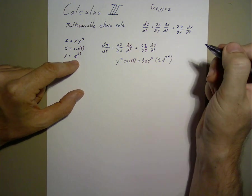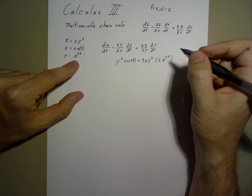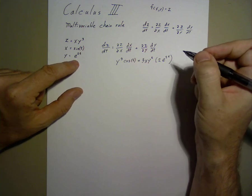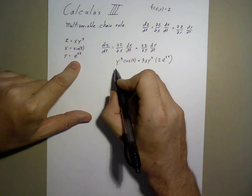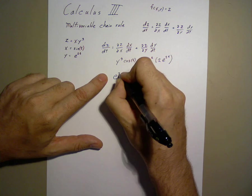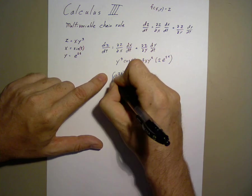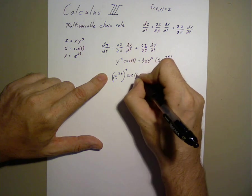Our last step involves replacing x and y with their appropriate functions with respect to t. So y cubed becomes e to the 2t cubed, cosine t.